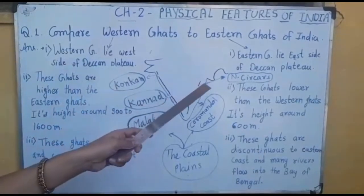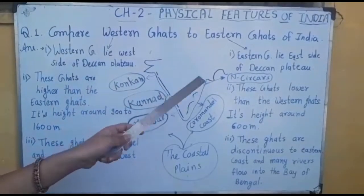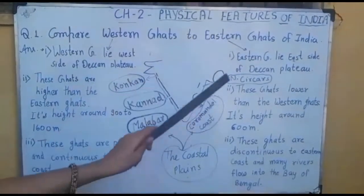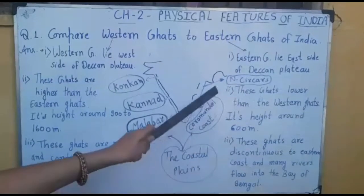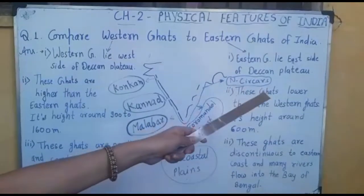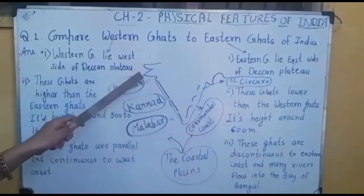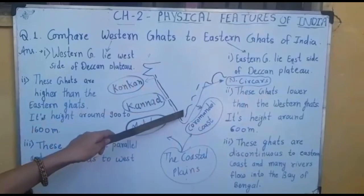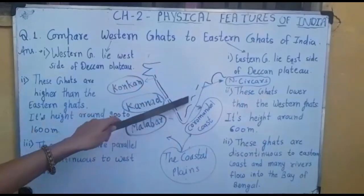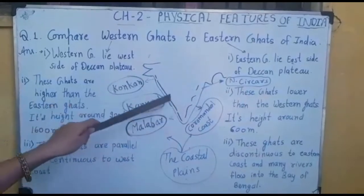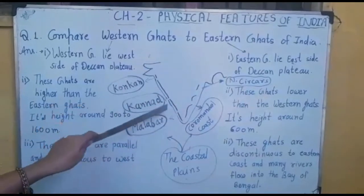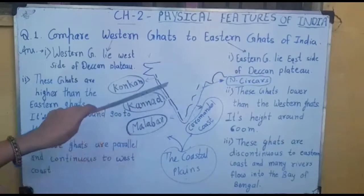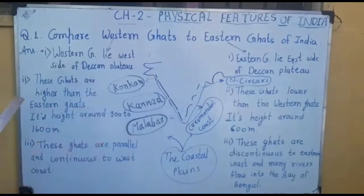Moving towards the Eastern Ghats — same thing — Eastern Ghats lie on the east side of Deccan Plateau. So this is the Western Ghats and this is the Eastern Ghats, inside the map of India.